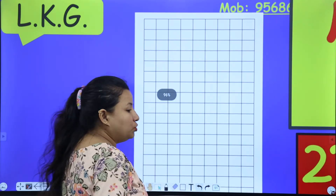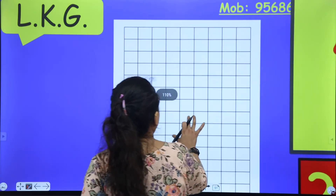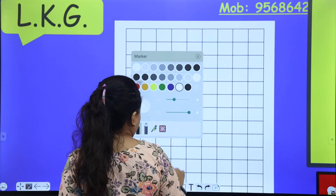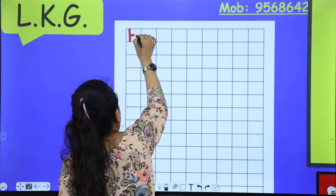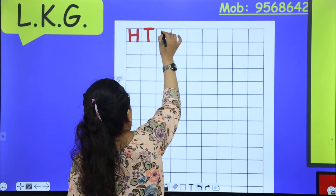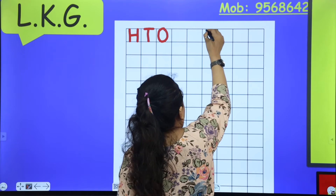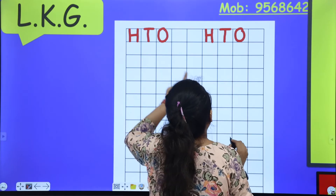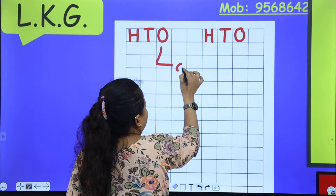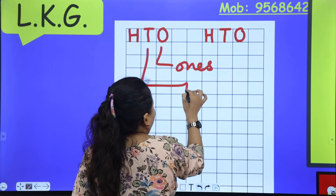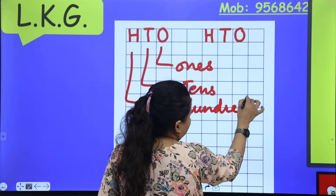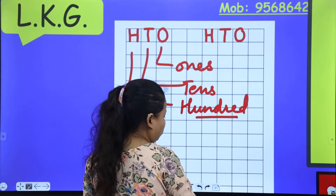Open your notebooks. First of all, we have to write H, T, O — H, T, O. H means hundreds, T means tens, and O means ones. So our counting is in the hundreds, that's why we have written H, T, O.